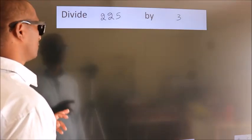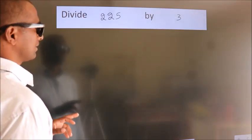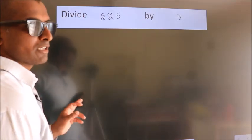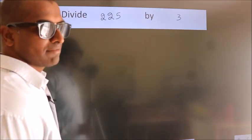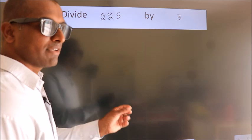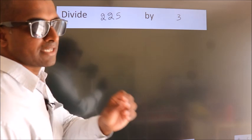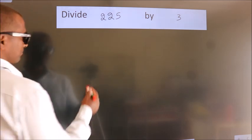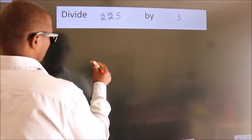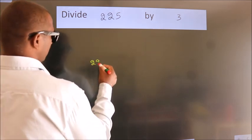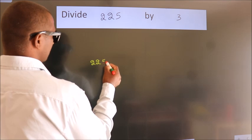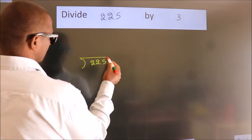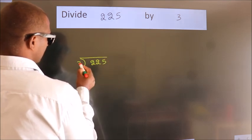Divide 225 by 3. To do this division, we should frame it in this way: 225 here, 3 here.